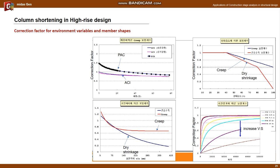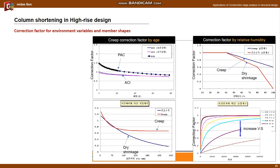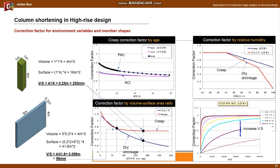Let's look at the curves for the variables in the correction factor formula. First is the correction factor according to the pouring environment and cross-section shape - when the factor is large, the strain increases. First is for the creep correction factor by age: as the age increases, the correction factor decreases. The second is for the correction factor by relative humidity: as relative humidity increases, the correction factor decreases. Next is the correction factor by volume surface area ratio. For example, for a column with 1-meter dimension, the volume-area ratio is 250 millimeters. For a wall with dimensions 0.2 meters by 5 meters, the ratio is about 100 millimeters. In the case of creep, the difference in factor is small, but in drying shrinkage, the ratio has an effect.